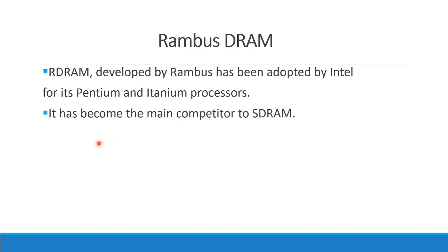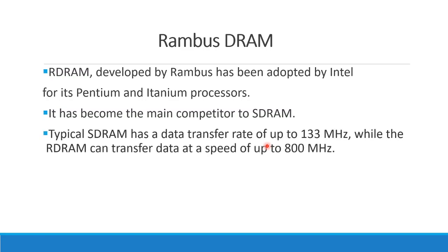Rambus DRAM has become the main competitor to SDRAM. SDRAM has a data transfer rate of 133 MHz, while the Rambus speed is 800 MHz.